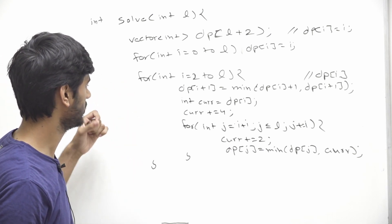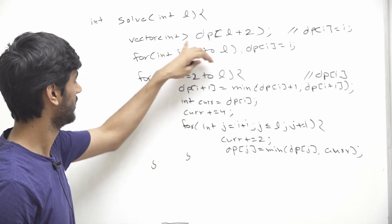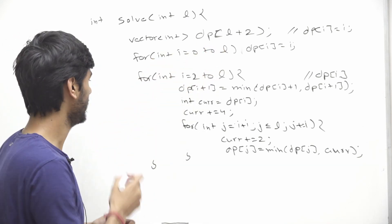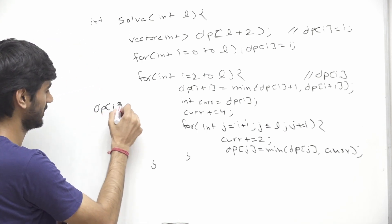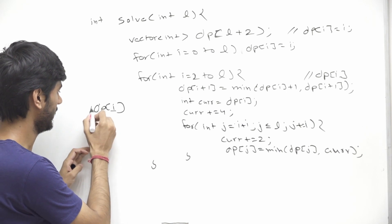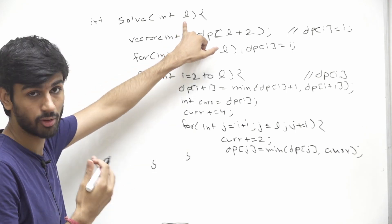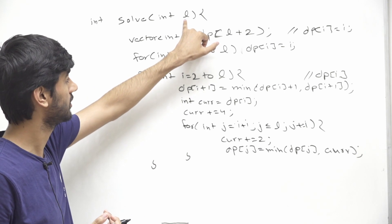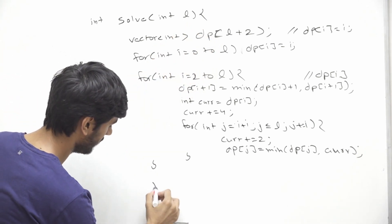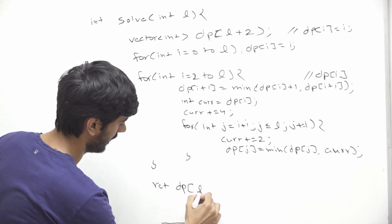After this for loop completes, we can be sure that dp[i] stores the minimum number of coins required to reach value i. Since we want to find the minimum number of coins required to reach l, our answer will be dp[l].